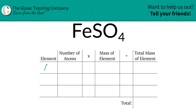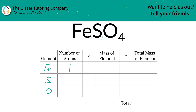The first thing I'm going to do is write down the elements in the compound. So we have iron, we have sulfur, and we have oxygen. Next is to write down the number of atoms of each. We've got to look at the subscripts to find the number of atoms. At the bottom of iron there is a 1, so there's 1 iron. At the bottom of sulfur there is also a 1, so there's 1 sulfur, and at the bottom of oxygen there's 4 oxygen.